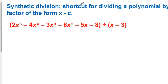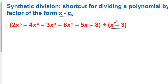Synthetic division — a shortcut for dividing a polynomial by a linear factor of the form x minus c. We're going to do synthetic division, and it only works when we're dividing by a power of 1. To do synthetic division, we put what makes the factor zero into a box. So 3 makes that factor 0; we put 3 in the box.